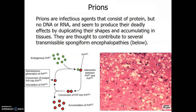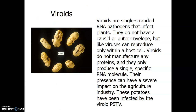Prions are not viruses — prions are actually proteins. A prion is an infectious mutated protein responsible for mad cow disease. Viroids, on the other hand, are single-stranded RNA pathogens that only infect plants and don't have a capsid. For example, these potatoes have been infected by the viroid PSTV.